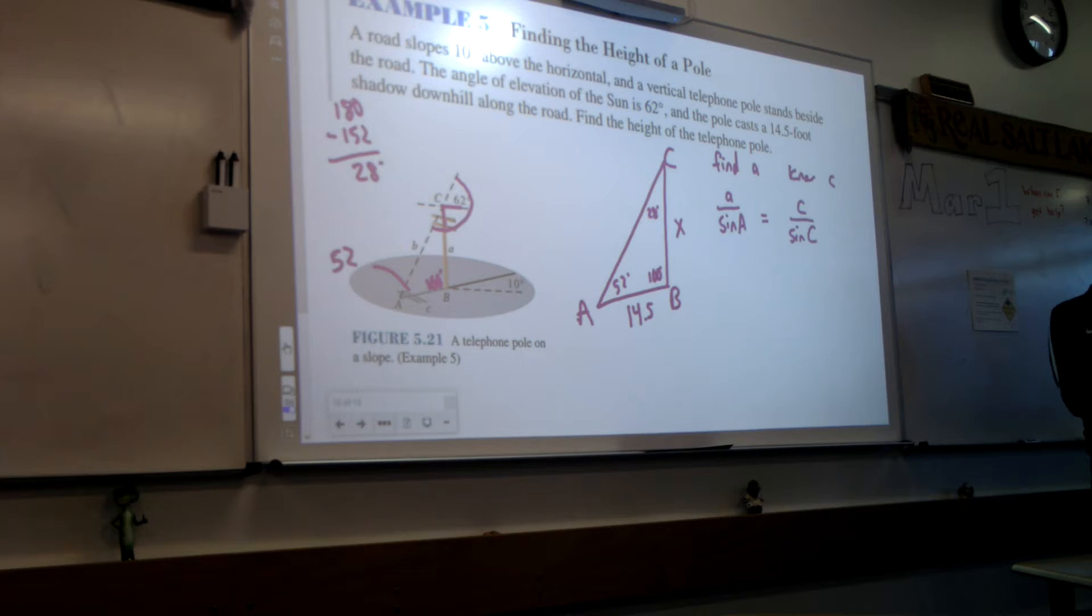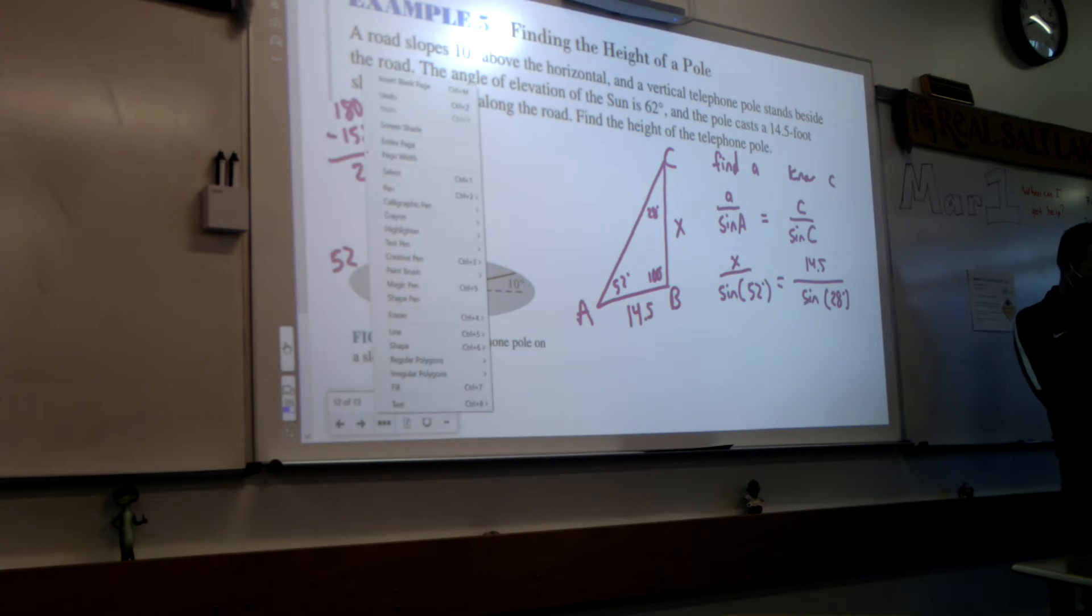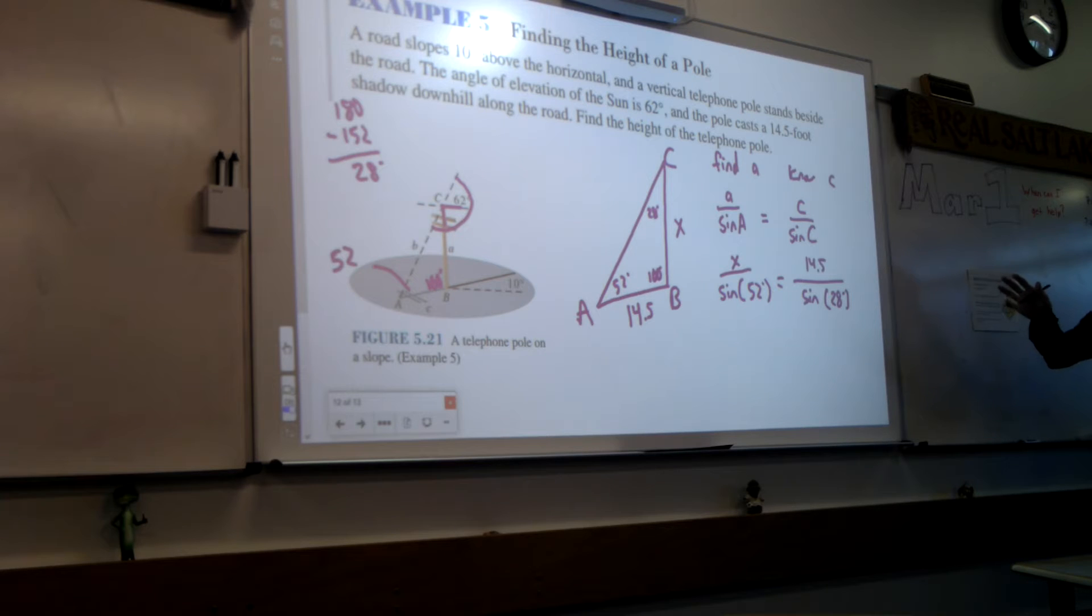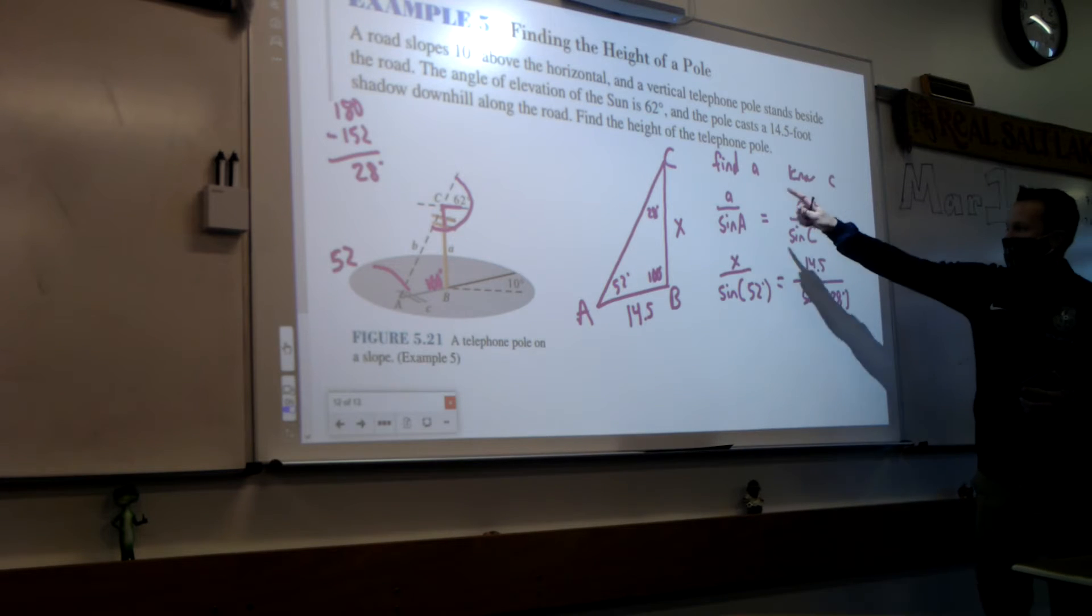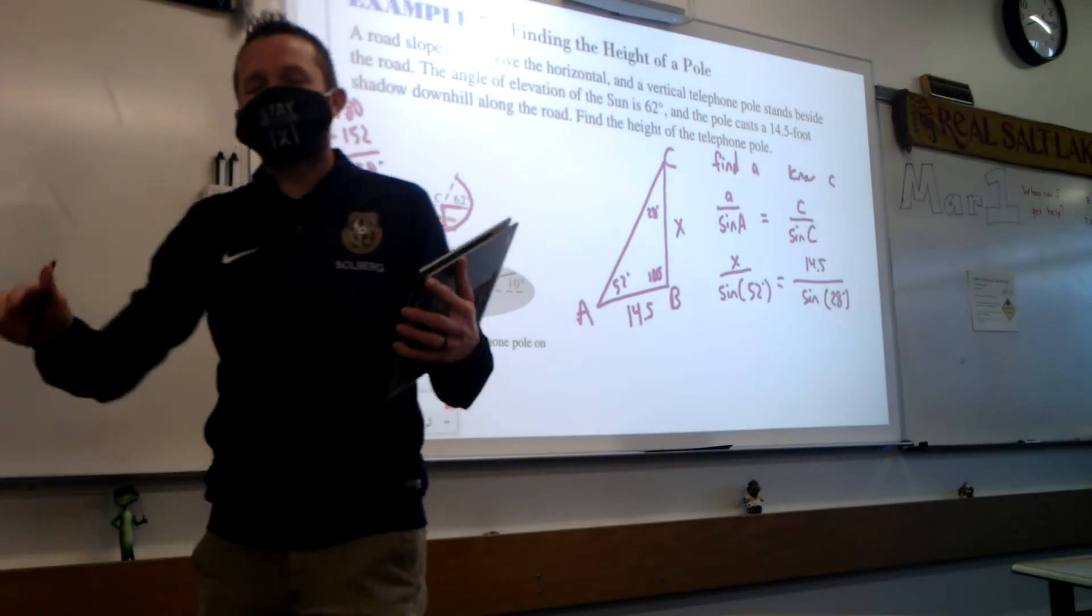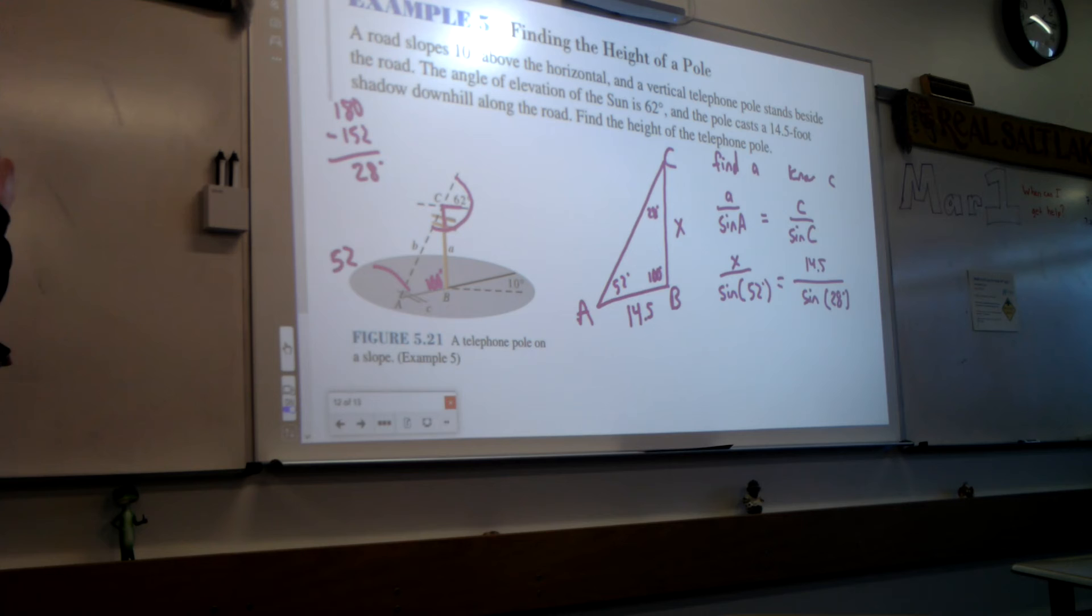When I plug that in, I don't know what A is. That's going to be our variable X. But what is angle A? Side C is 14.5. What is angle C? Now we've gone over law of sines before. Does it make sense how we set that up? We knew what we're trying to find. We were able to know both the side and angle C. We're solving for a side, so we put sides on top.